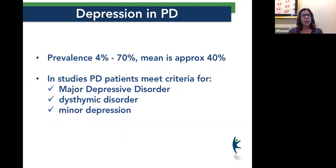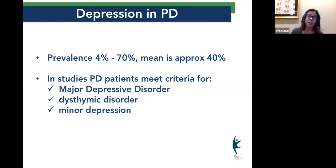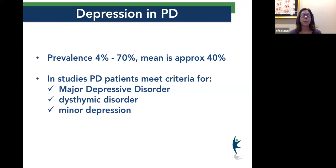There's a lot of variability in the research as to how much depression is related to Parkinson's disease, but we think about 40% — four out of ten Parkinson's patients — will have clinical depression. Much of that goes untreated adequately. I always like to bring it to the forefront to remember it's something you should address with your physician. It can be everything from major depressive disorder to dysthymic disorder or even minor depression.